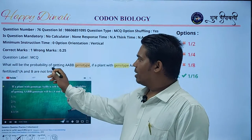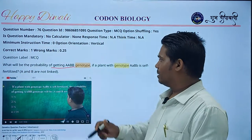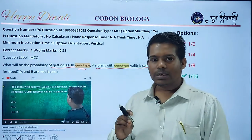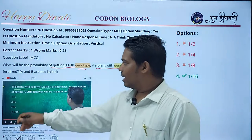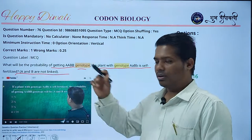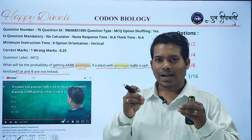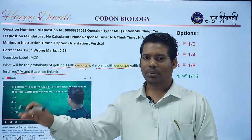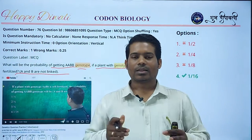The second question was: what will be the probability of getting the Capital A Capital A Capital B Capital B genotype in a plant with genotype Capital A Capital B small a small b that is self-fertilized, where A and B are not linked? This question is exactly as I solved it in the previous lecture. I want to thank my Codon Biology team for making these very important questions.